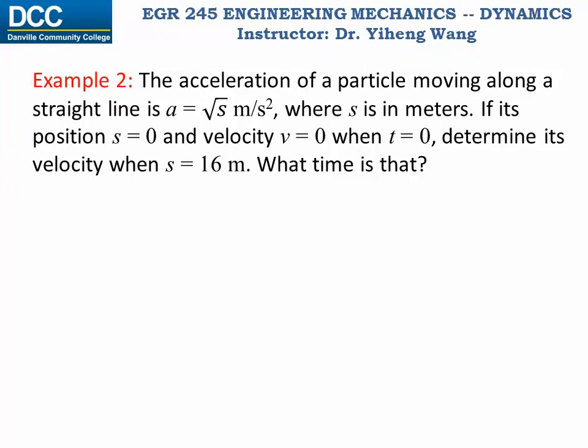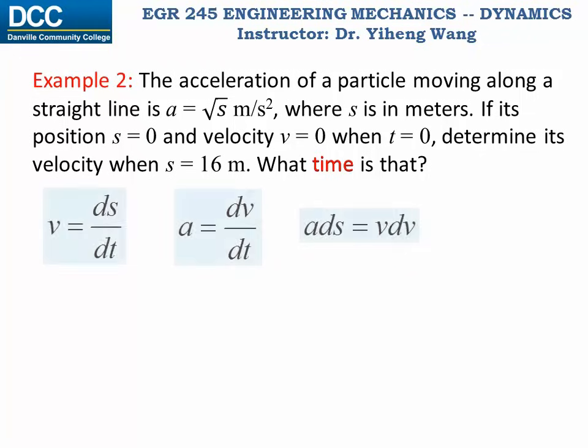For the second part of this problem, we need to find the time when the position is 16 meters. If we look at the three equations again, the variables of interest are acceleration, position, and time. And we notice that equation two can be rewritten as acceleration being the second time derivative of position, which relates these variables of interest.